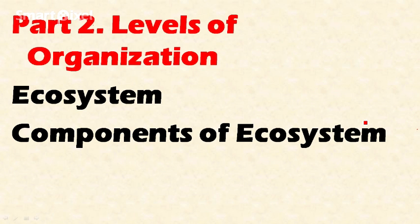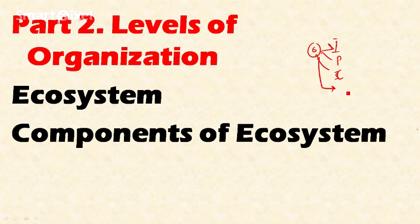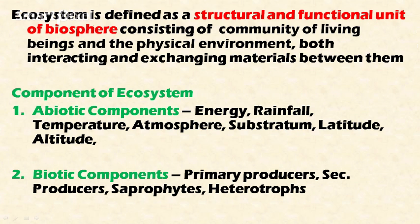Welcome friends. In this video let's discuss Part 2 of levels of organization in ecology. In the first part we discussed six levels of organization — individual, population, and community — and in this video let's discuss about the ecosystem.